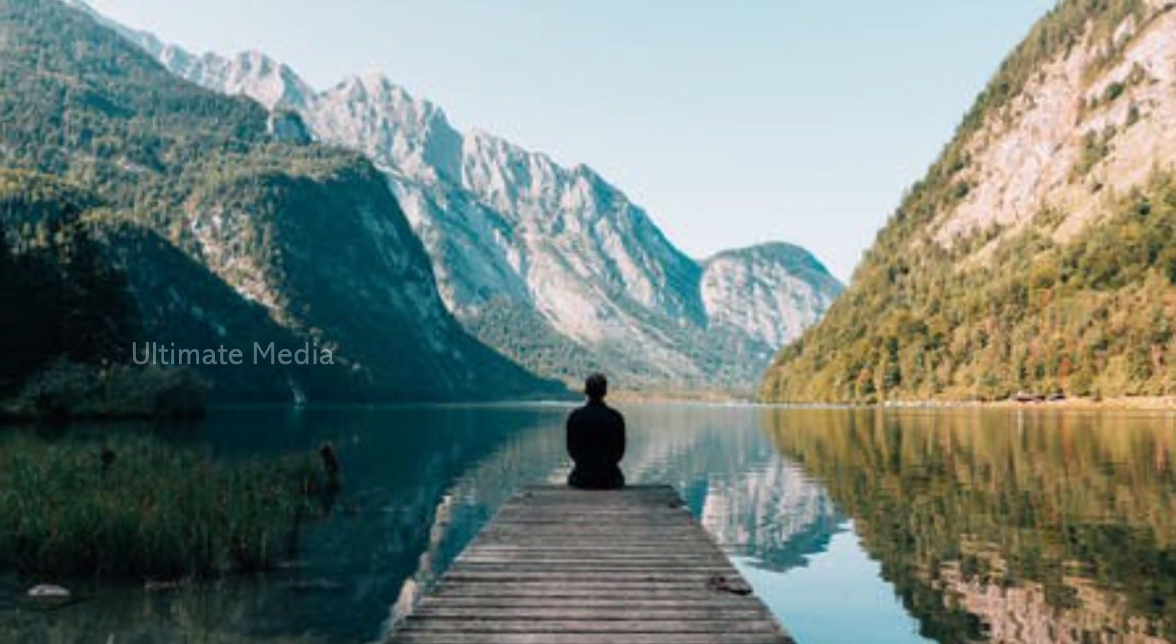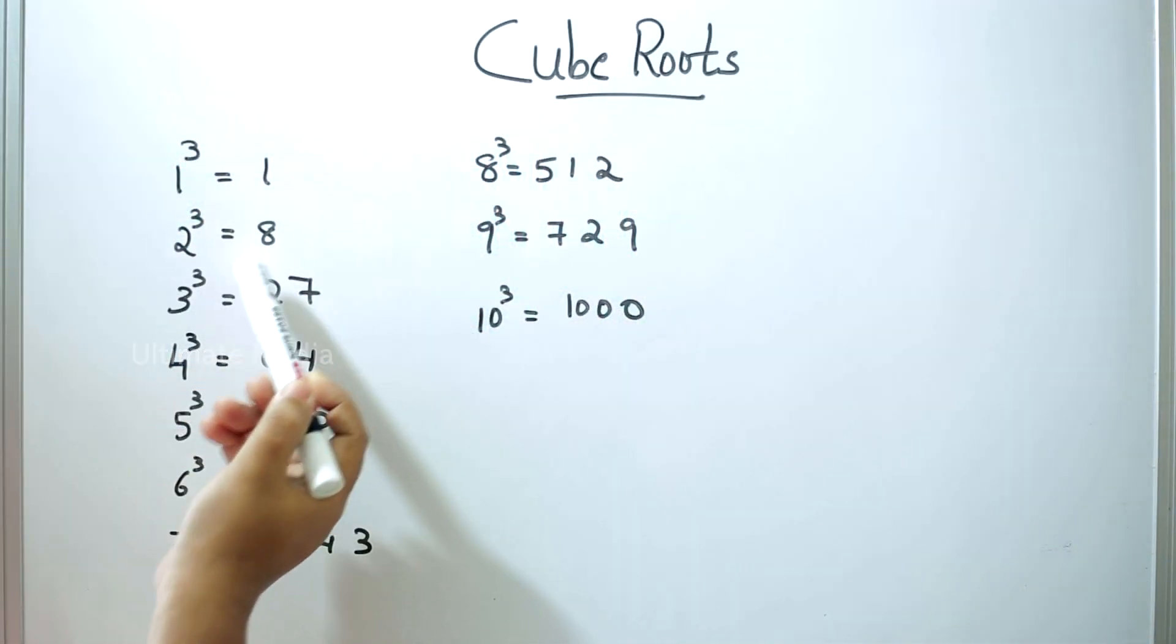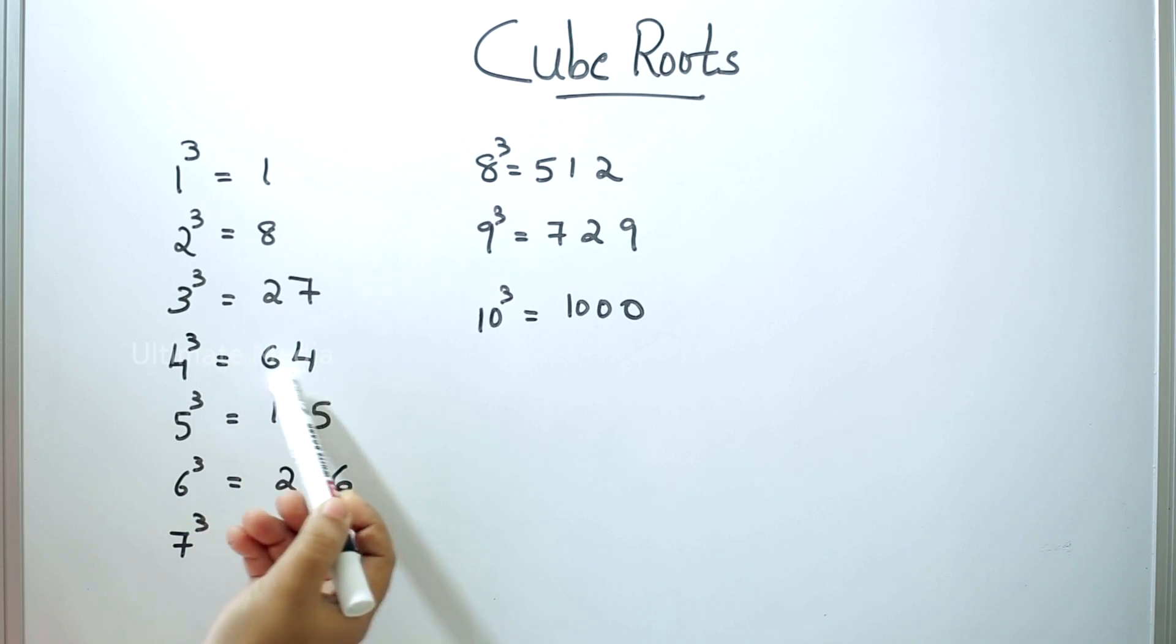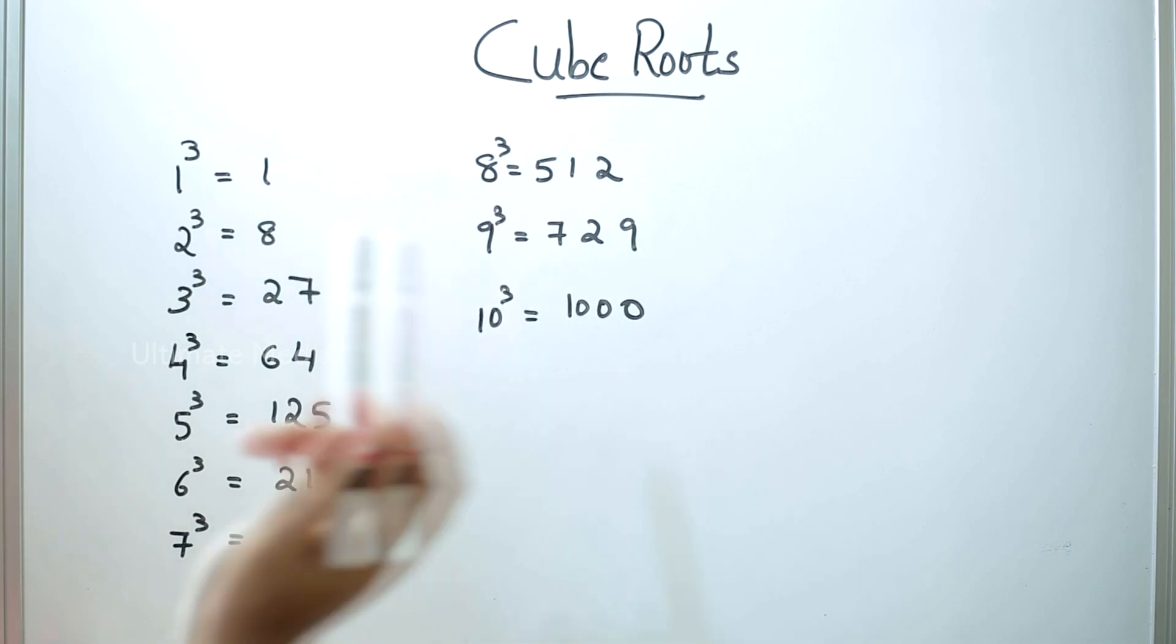The cube roots are: 1 cube is 1, 2 cube is 8, 3 cube is 27, 4 cube is 64, 5 cube is 125, 6 cube is 216, 7 cube is 343, 8 cube is 512, 9 cube is 729, 10 cube is 1000.